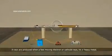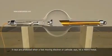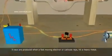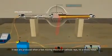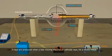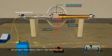As we learned earlier, X-rays are produced when fast-moving electrons or cathode rays hit a heavy metal. Let us learn more about how X-rays are produced.